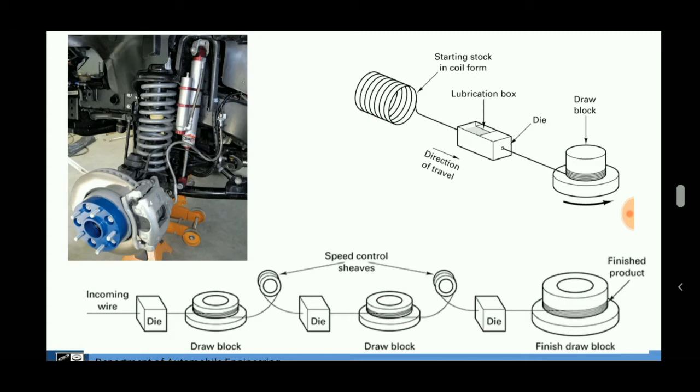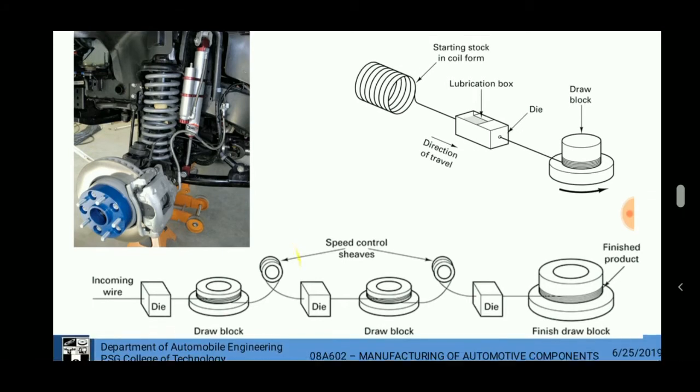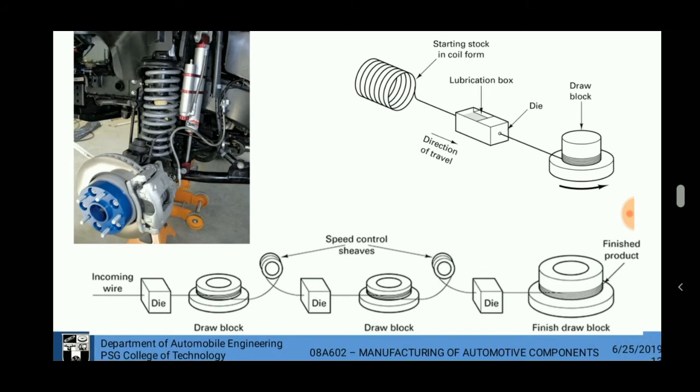Which is of the split type. The mandrel contains grooves so that this material can seat on this mandrel so that it can get a perfect shape. Then it undergoes a heat treatment that involves shot peening and heating.